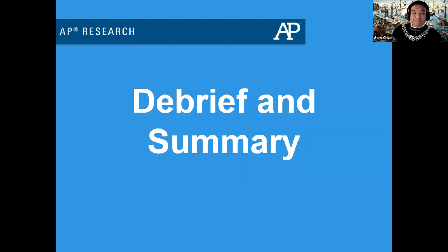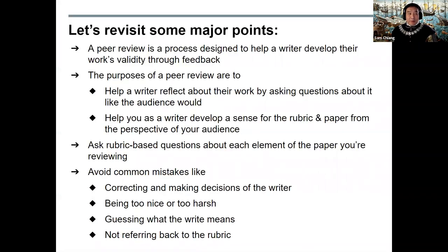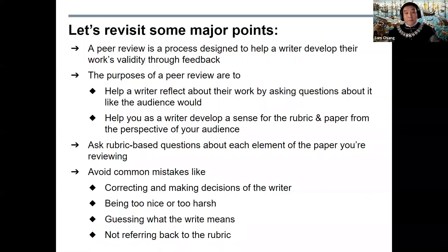Thanks, Emily. Let's recap. In this lesson we learned about peer reviewing. A peer review is a process designed to help a writer develop their work's validity through feedback. The purposes are to help a writer reflect about their work by asking questions like the audience would, to help you as a writer develop a sense for the rubric and paper from the perspective of your audience, to ask rubric-based questions about each element of the paper you're reviewing, and to avoid common mistakes like correcting and making decisions for the writer, being too nice or too harsh, guessing what the writer means, and not referring back to the rubric.